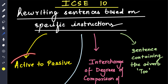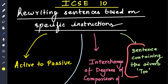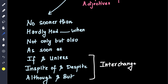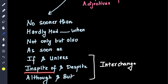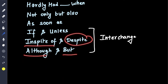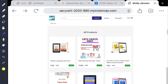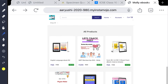There are different sentence types: active to passive, interchange of degrees of comparison of adjective, sentences containing the adverb 'too', then converting sentences using no sooner than, hardly had, when, not only but also, as soon as, interchange of if and unless, in spite of and despite, although and but. So let's begin.